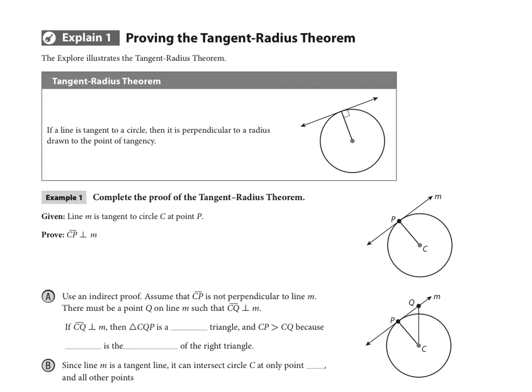If a line is tangent to a circle, so here's the line tangent to the circle, remember we talked about it touching at only one point, then it is perpendicular—you see the right angle there—to any radius that is drawn out from the center to that point of tangency.